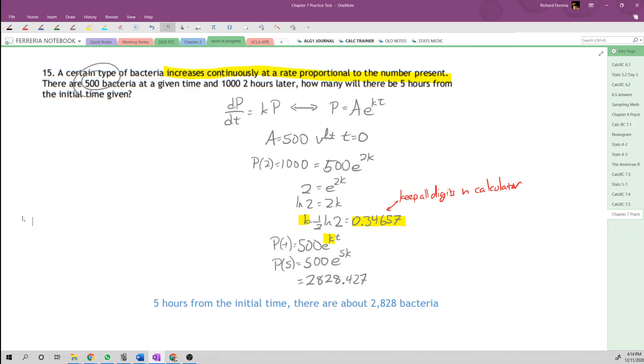Five hours from the initial time, there are about 2,828 bacteria. Notice I used the word 'about' here, indicating I rounded the results. So there's our exponential growth model. See you next time.